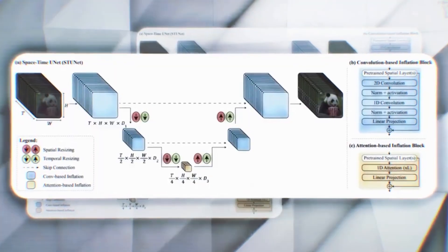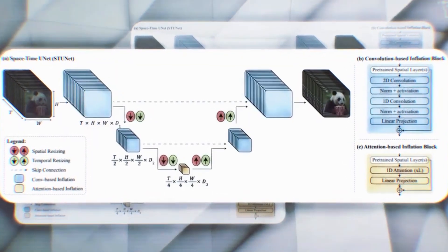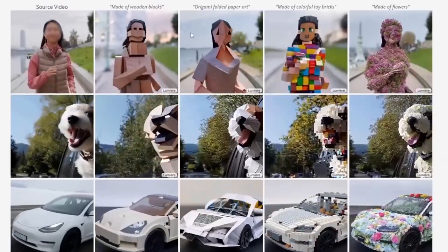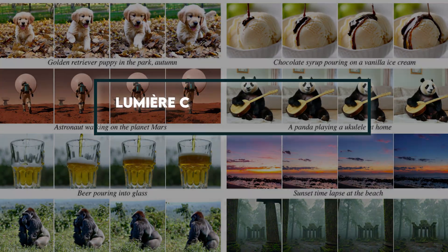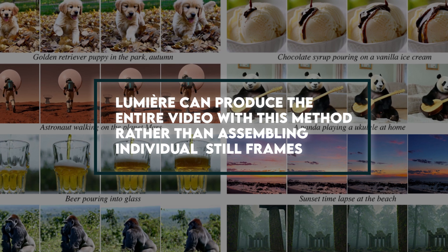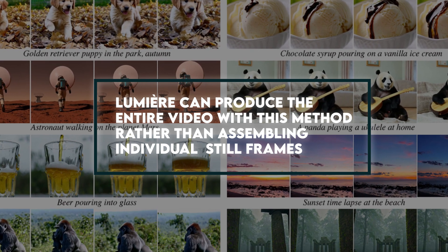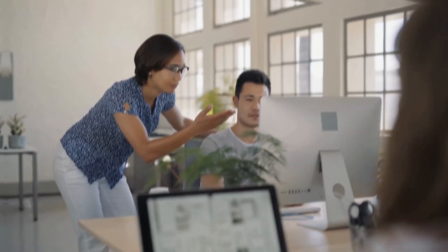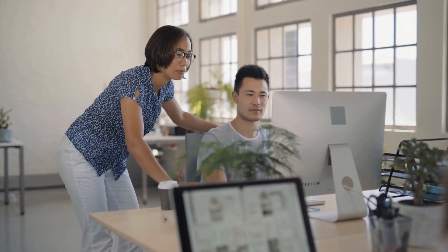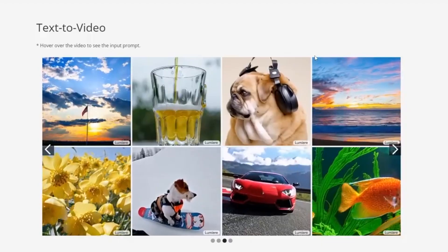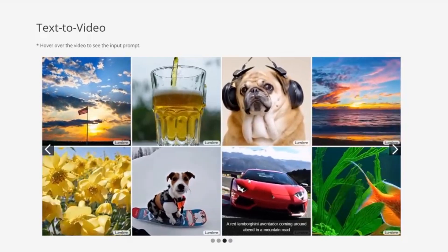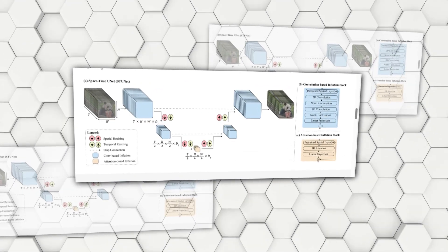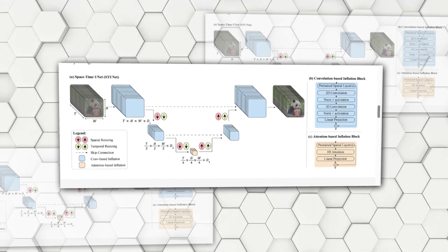A novel diffusion model known as space-time U-Net, or STU-Net, is used by Lumiere to determine where objects are in a video in space, and how they simultaneously move and change over time. Lumiere can produce the entire video with this method rather than assembling individual still frames. The distribution learning of this AI model was accomplished by adding more guiding signals, such as spatial conditioning and incorporated text. Lumiere employs a base model and a spatial super resolution model as its framework.